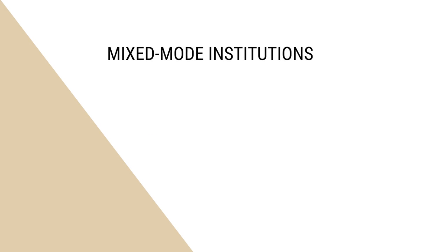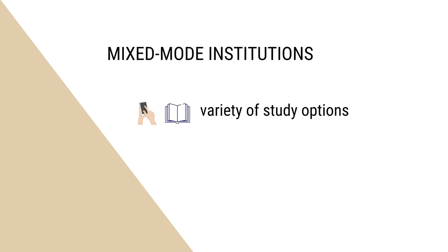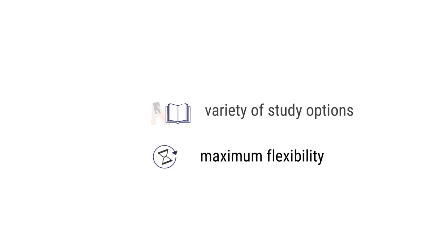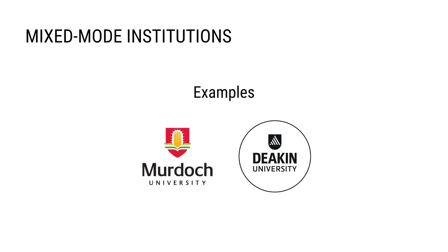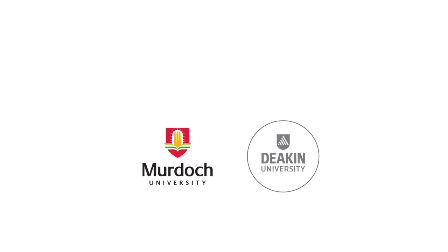Mixed mode institutions are the latest crop to emerge and they aim to provide maximum flexibility to the learners. They help learners with a variety of choices in the modes of study, including combinations of individual or group-based learning, face-to-face or mediated interactions. Such institutions also maximize the flexibility of the place and pace of study. The single and dual mode institutions are also moving towards the mixed mode. Murdoch University and Deakin University are examples of mixed mode universities.